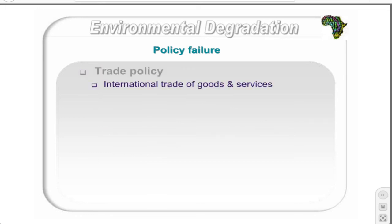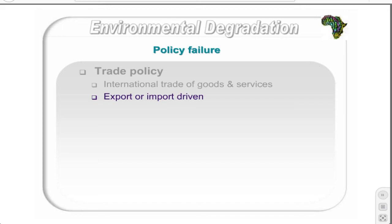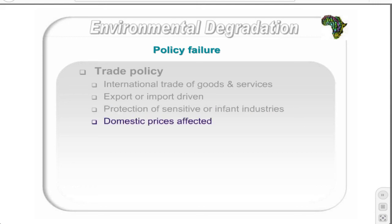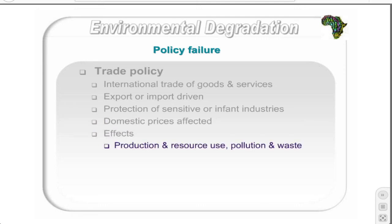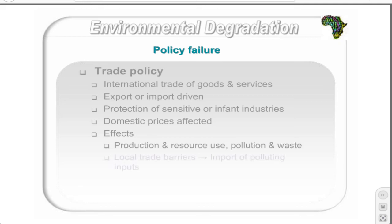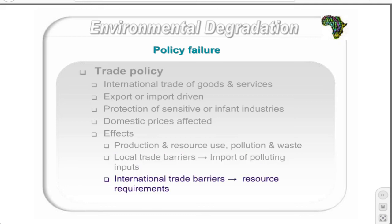Trade policy focuses on international trade of goods and services and can be either outward or inward focused. It affects domestic prices by changing the prices of imports or regulating quantities of products that may be imported, directly affecting production and natural resource use, pollution, and waste generation. Local trade barriers can increase or reduce imports of polluting production inputs, while international trade barriers can create incentives to produce products with higher resource requirements or increase production to unsustainable levels.